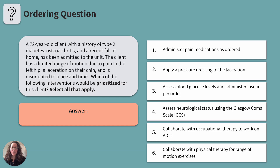A 72-year-old client with a history of type 2 diabetes, osteoarthritis, and a recent fall at home has been admitted to the unit. The client has limited range of motion due to pain in their left hip, a laceration on their chin, and is disoriented to place and time. Which of the following interventions would be prioritized for this client? Select all that apply.